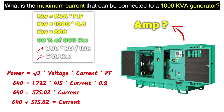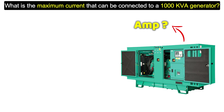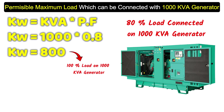We divide 640 by 572 (approximately), and the answer is 1.11. This answer is in kilo-ampere. To convert kilo-ampere to ampere, simply multiply by 1000. The answer is 1110 ampere. That means the maximum current we can flow through a 1000 kVA generator is 1110 ampere.